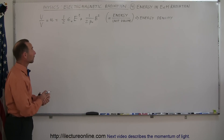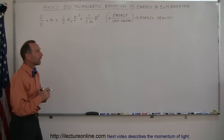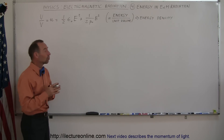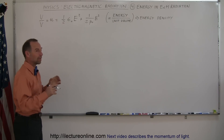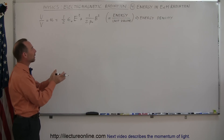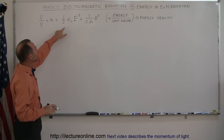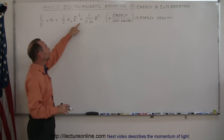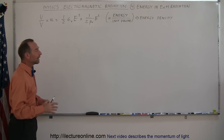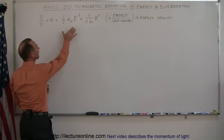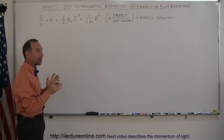This is segment four on electromagnetic radiation. We're going to talk about the energy contained within electromagnetic radiation and the equation that describes the energy per unit volume, written as small u — how many joules of energy we have in a cubic meter of space. That equals one-half epsilon-naught E squared plus one-half times one over mu-naught times B squared. The energy is contained both within the electric field oscillations and the magnetic field oscillations, and it turns out to be half and half.